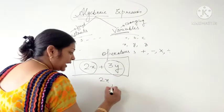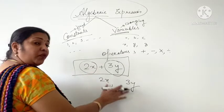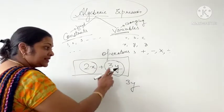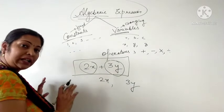These 2X and 3Y are known as Terms of Algebraic Expression.